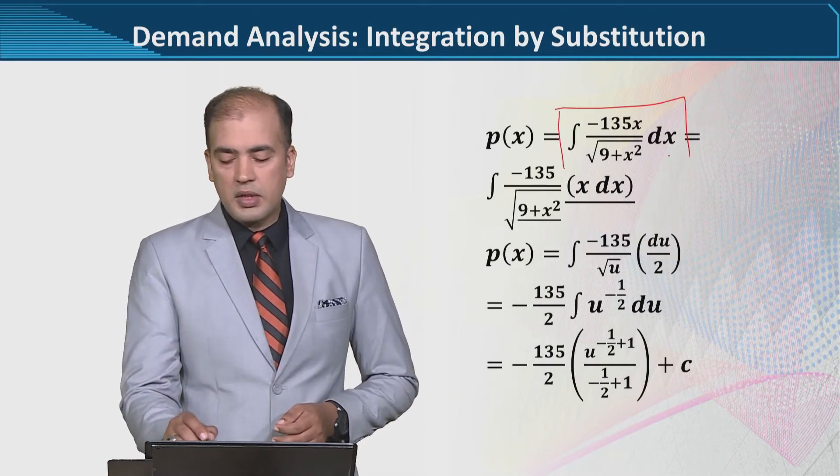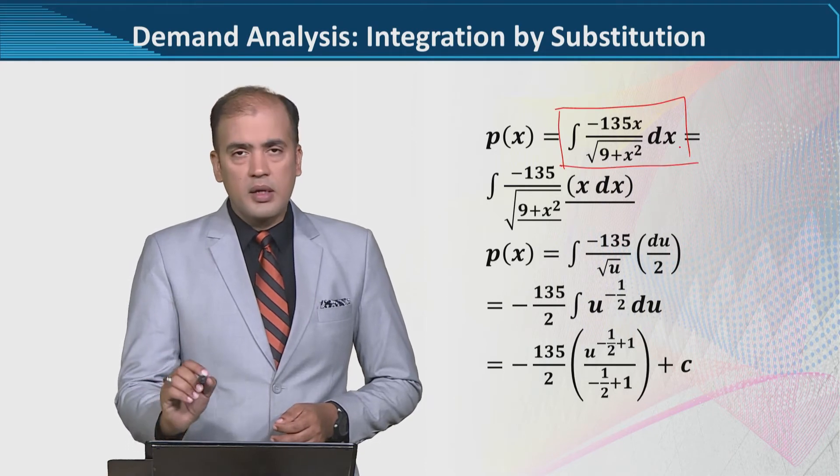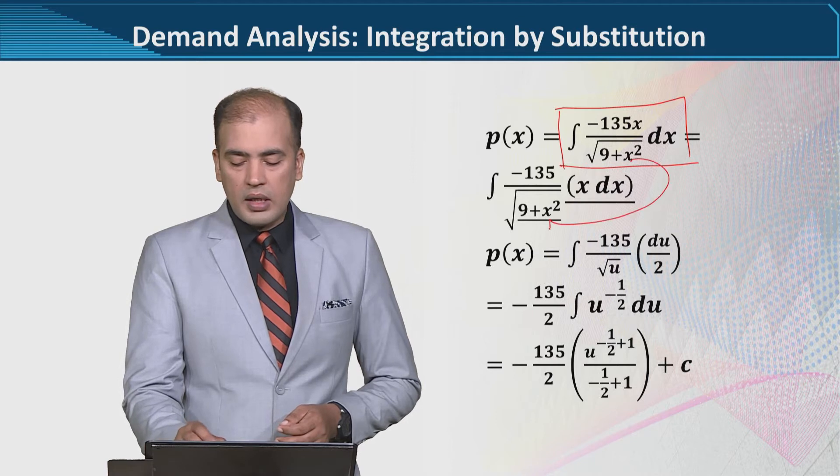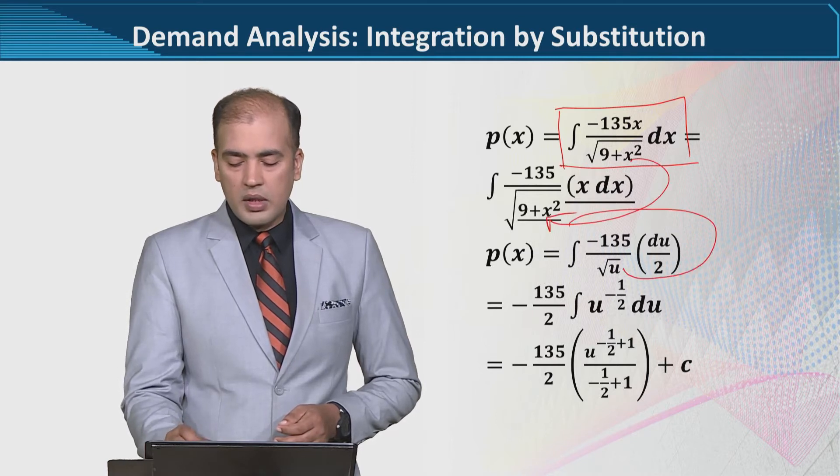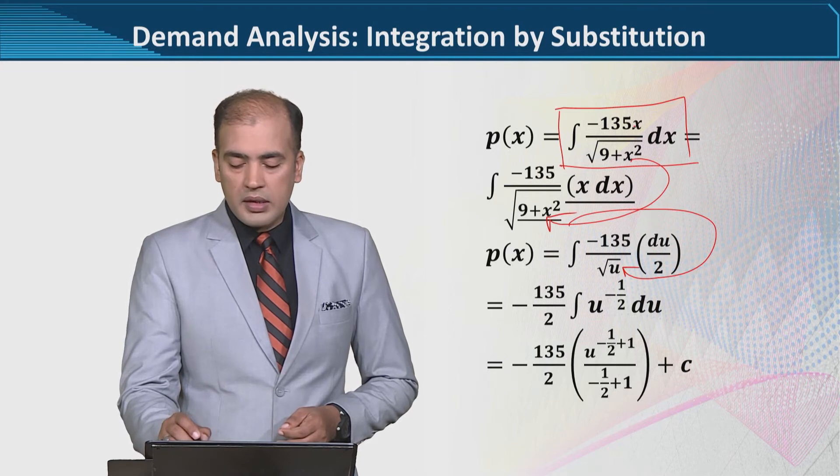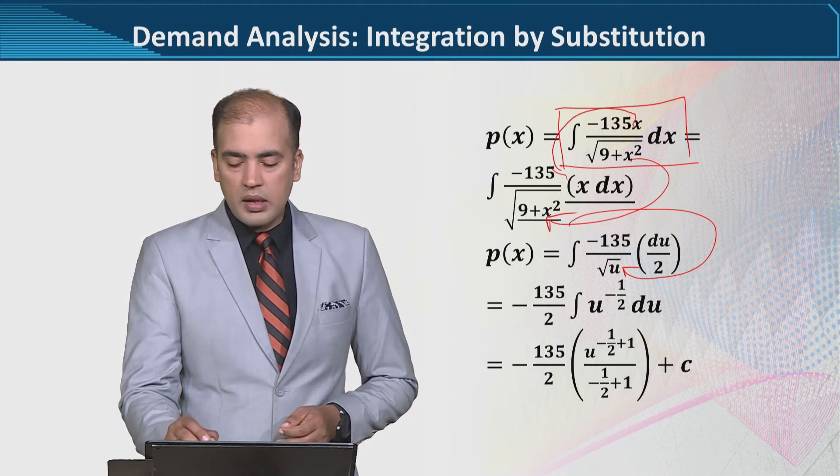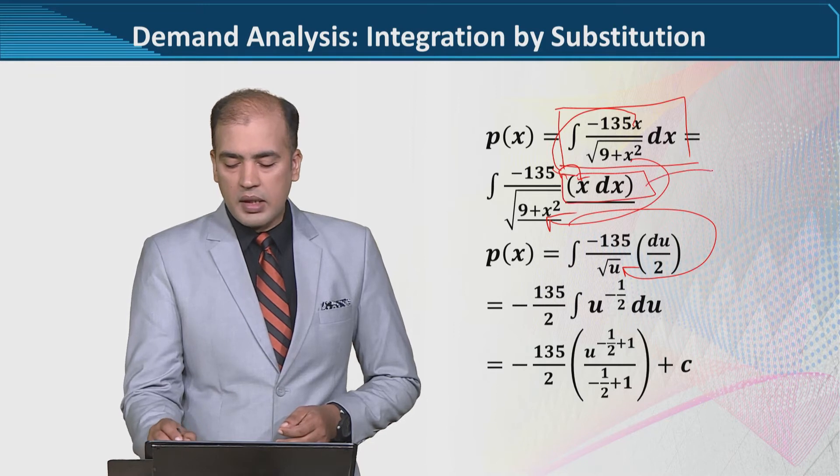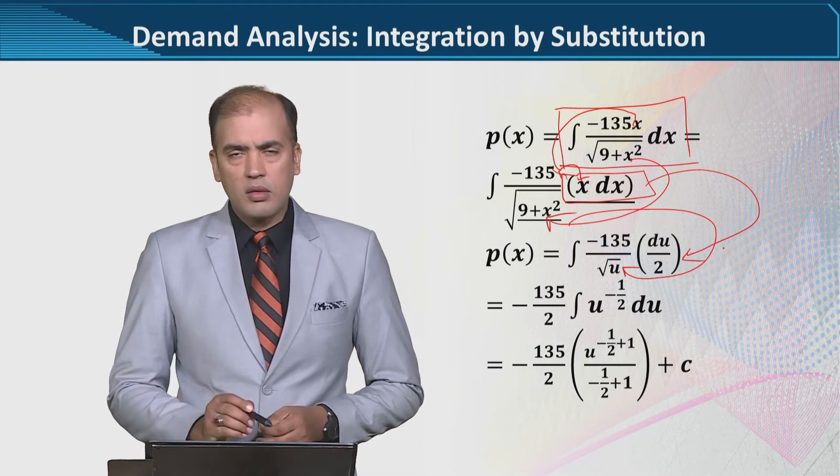So you see, we assumed u and calculated its derivative. After that, we found the value of x dx because we expect that we will need to substitute this value here. This will become clear when we substitute it.